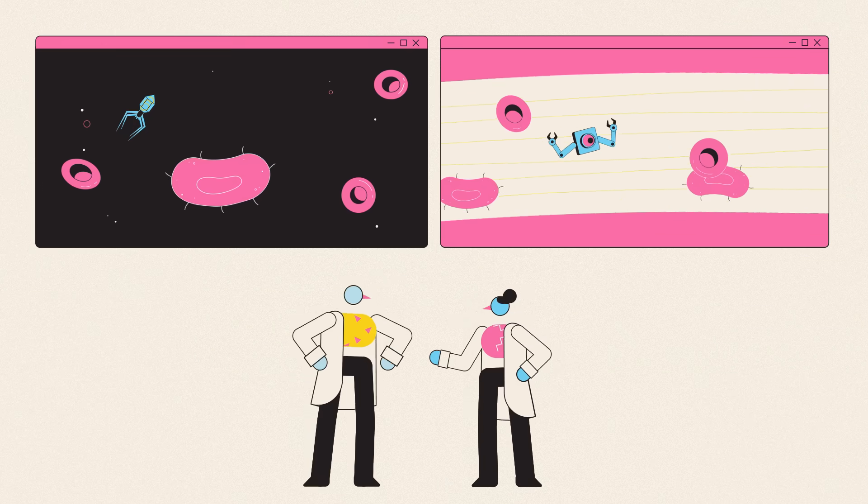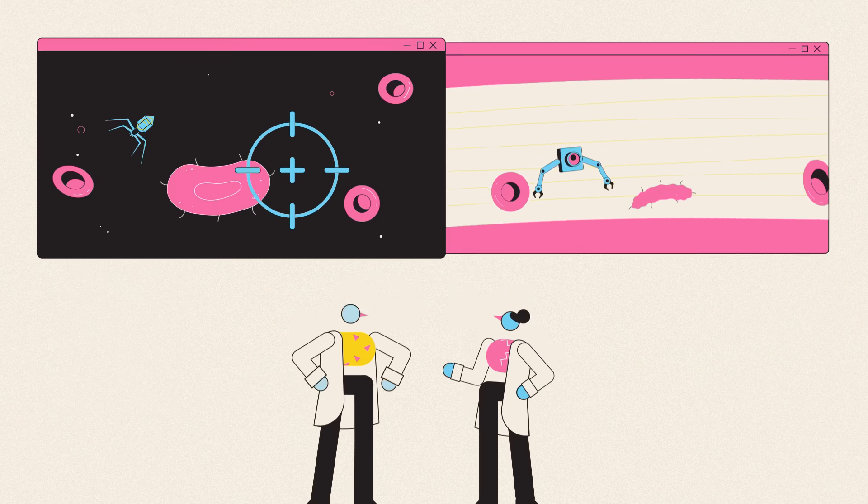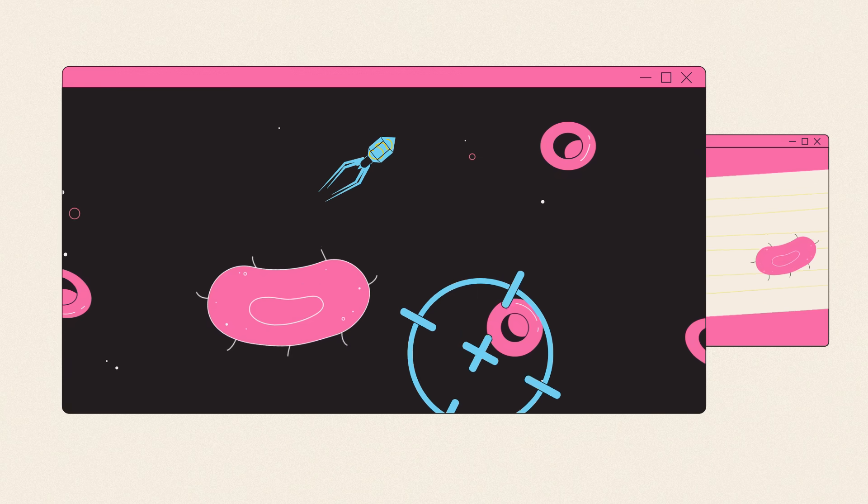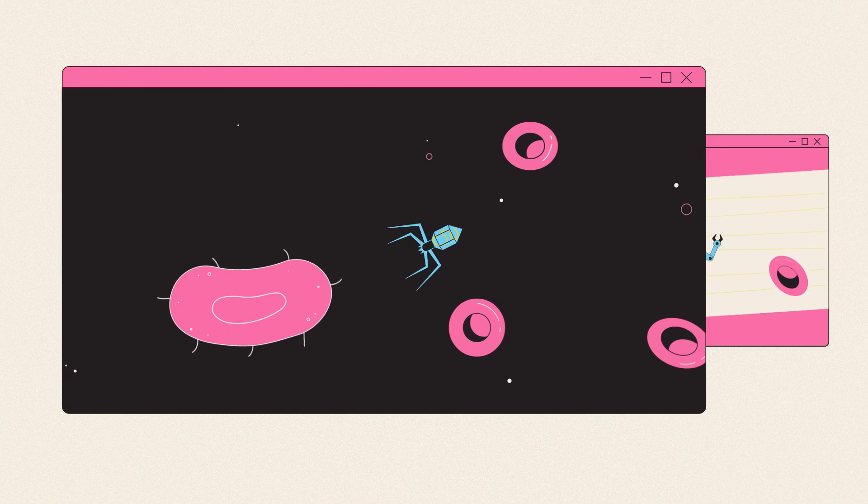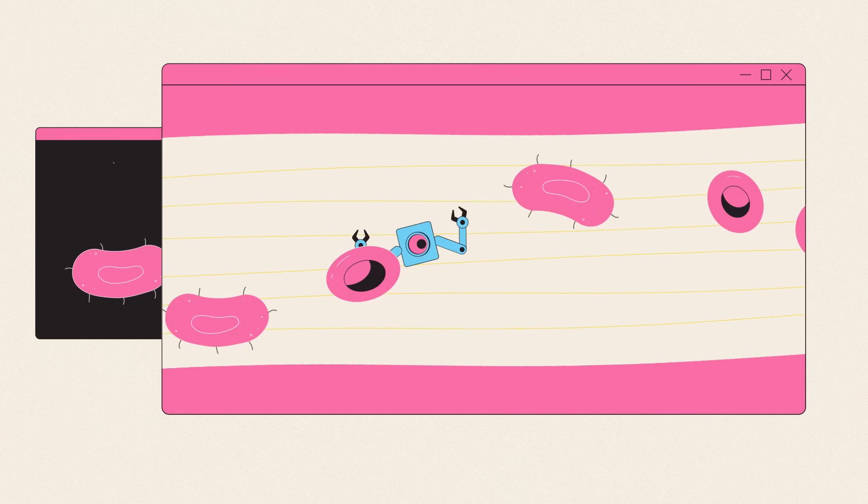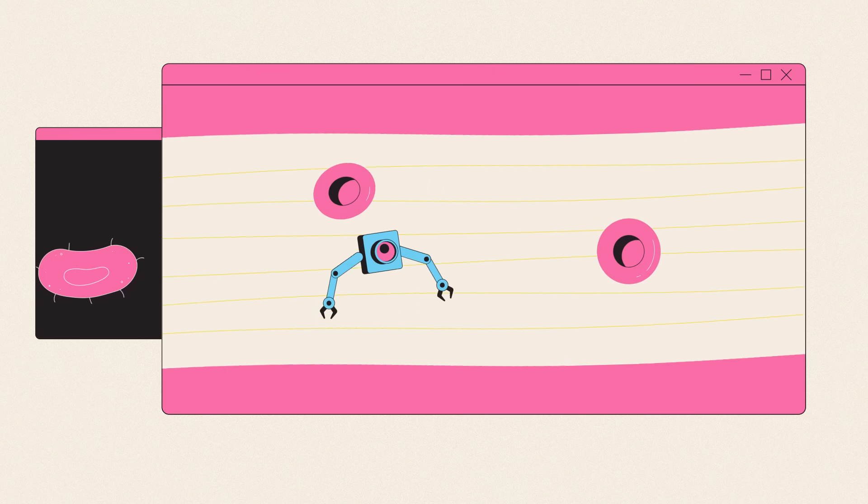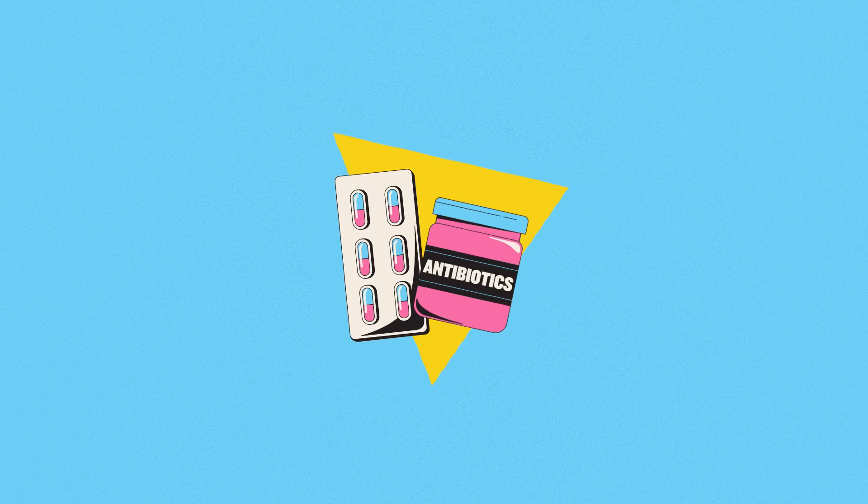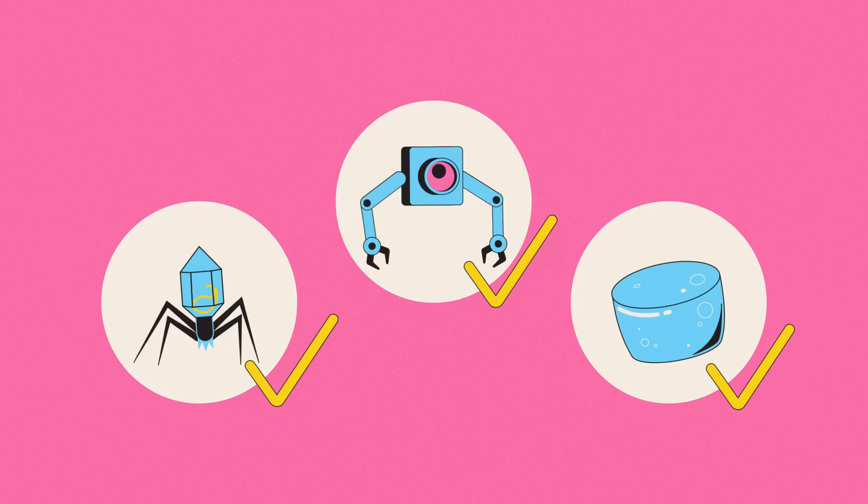But while both are exciting, neither is without its challenges. Phage therapy requires an accurate diagnosis and a virus that attacks exactly the right kind of bacteria, while nanoparticles need a lot more research before we can be sure they're safe to use. In the long run, though, the consequences of losing antibiotics means any promising alternatives are worth exploring.